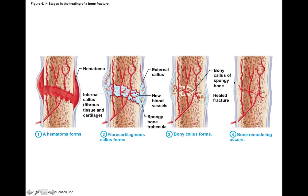To summarize the four major steps of bone repair: first, hematoma — the blood clot; second, fibrocartilaginous callus — the hematoma is converted to fibrocartilage; third, bony callus — fibrocartilage is converted to spongy bone; and fourth, bone remodeling — which occurs over the course of years, remodeling the new bone in a way that best suits how the bone will be used.